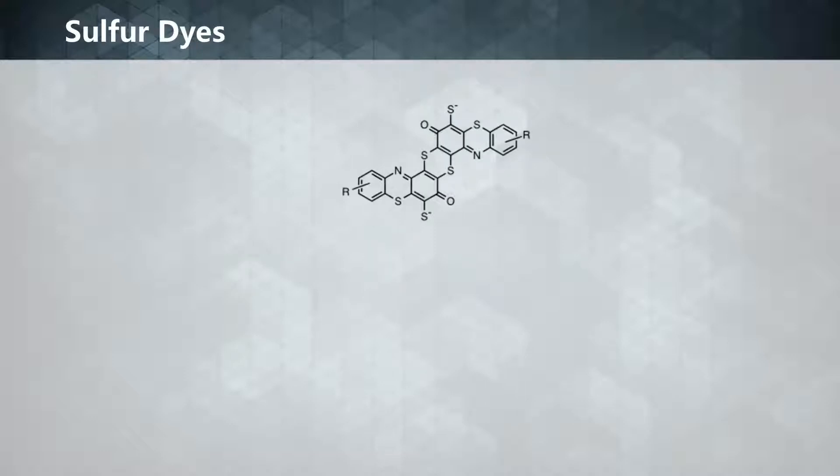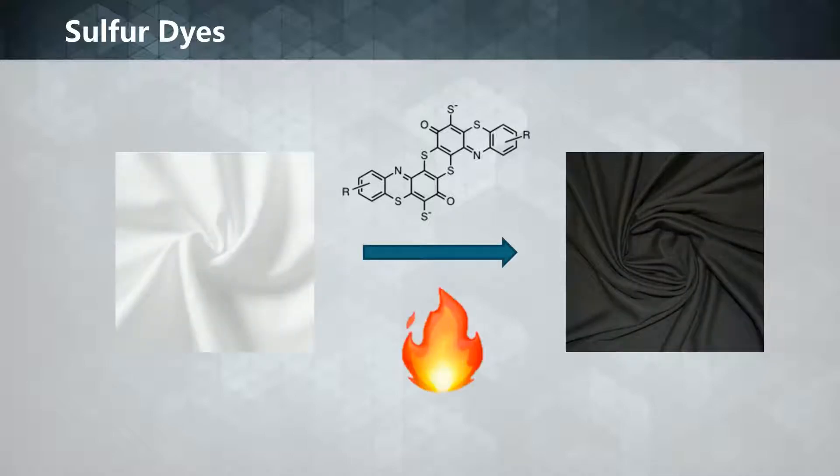Sulfur dyes are cheap dyes used to dye cotton with dark color. Dyeing is achieved by heating the fabric in a solution of organic compounds and sulfides or polysulfides. The organic compound reacts with a sulfide source to form a dark color that adheres to the fabric.